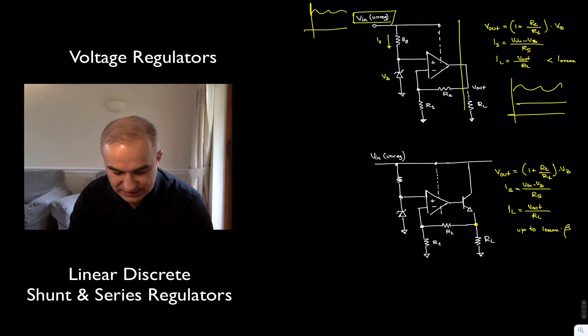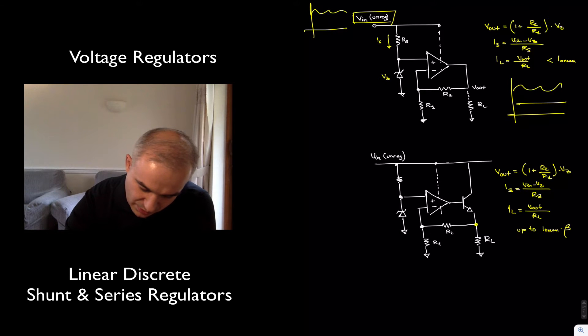And what we are doing is, as you have seen in the previous example, we bias a Zener to establish a reference voltage. In this case, we have a Zener voltage there.